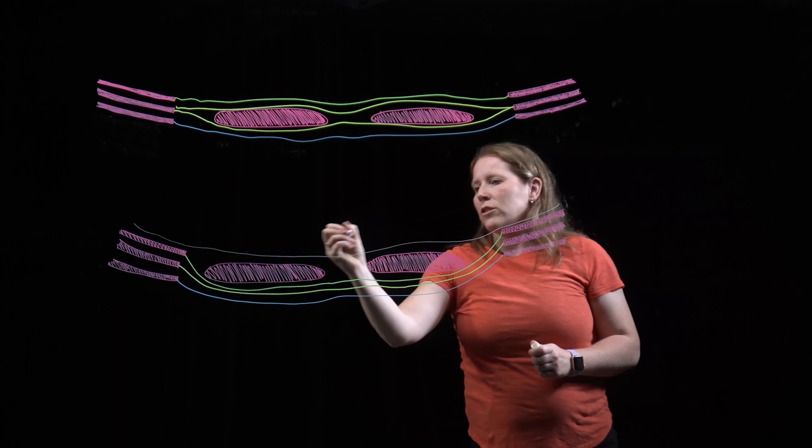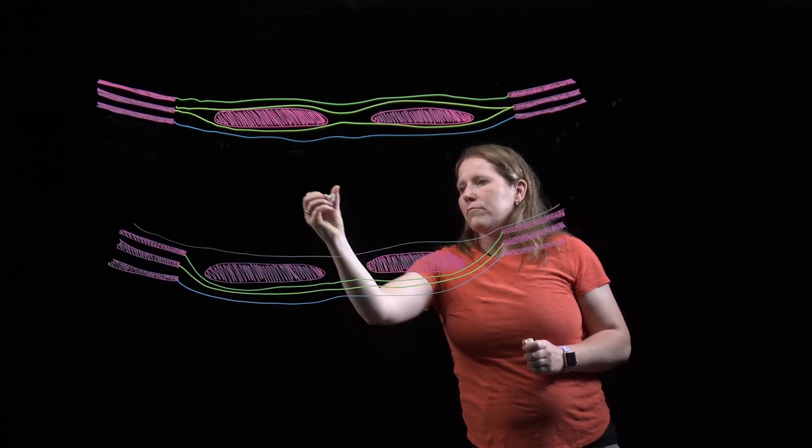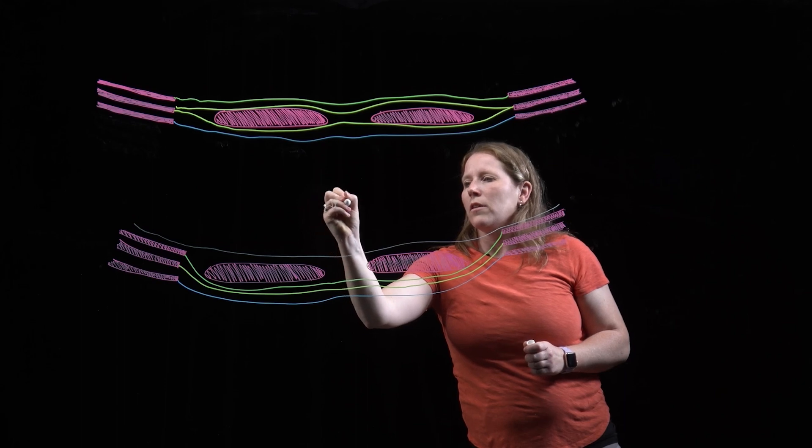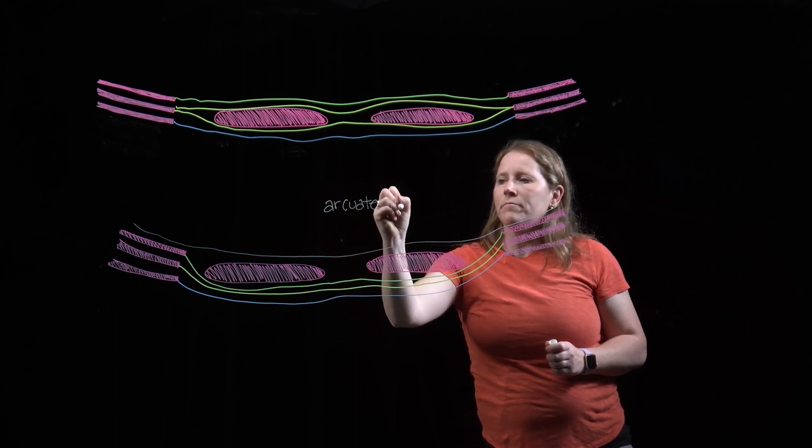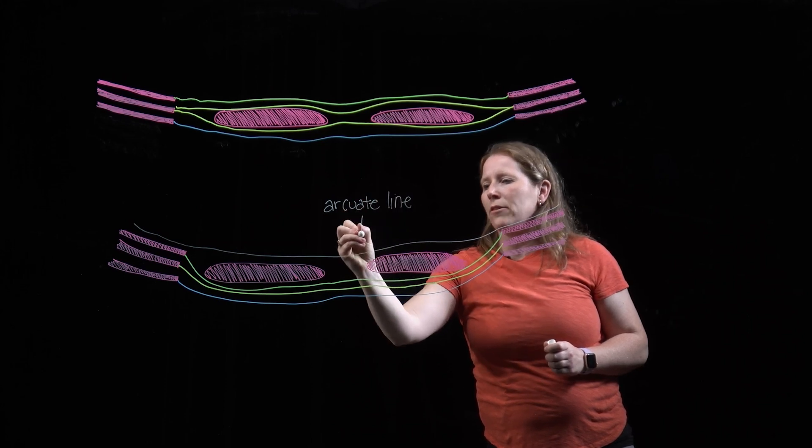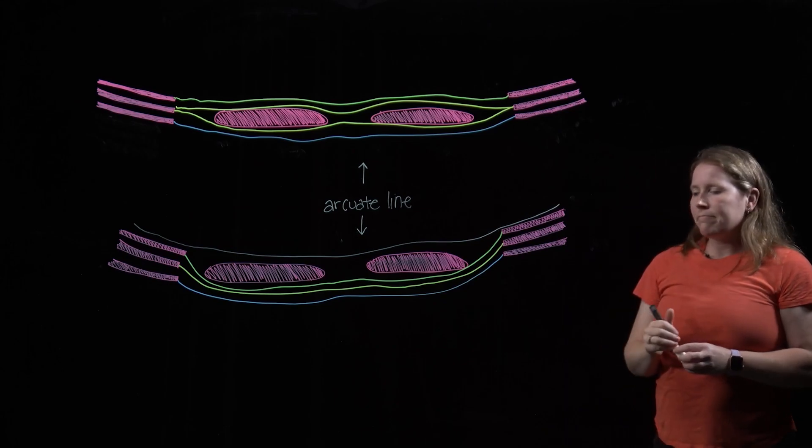And the point at which this change happens is called the arcuate line. So this is the pattern below the arcuate line, and this is the pattern above the arcuate line.